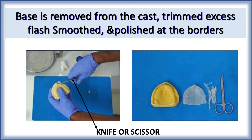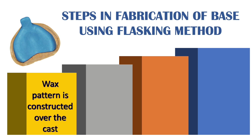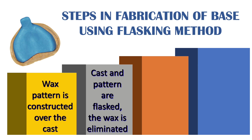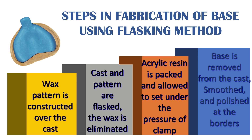In the flasking method, a wax pattern is made over the cast. The cast and pattern are flasked, and the wax is eliminated. After de-waxing, acrylic resin is packed and allowed to set under a pressure clamp. The base is then removed from the cast and smoothened and polished. This flasking method is the same process used for complete dentures.